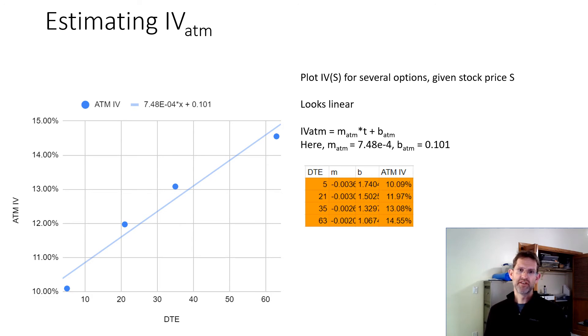It's actually a pretty significant skew with time. The near expiration at-the-money IVs around 10%, but it climbs to 15% by the time we get to 60 days expiration.